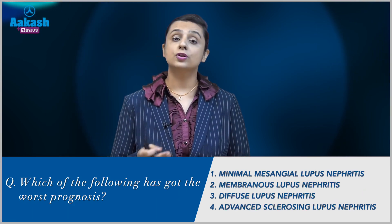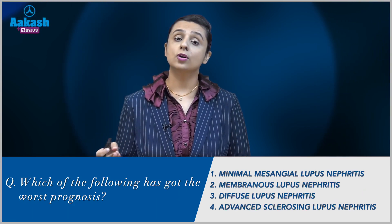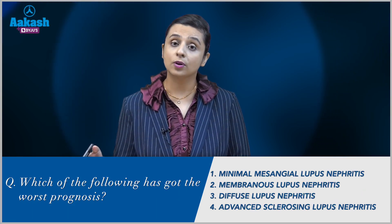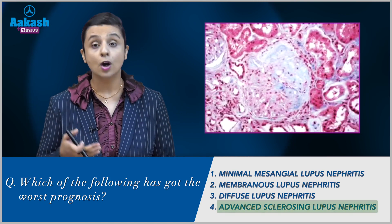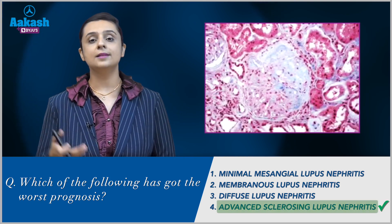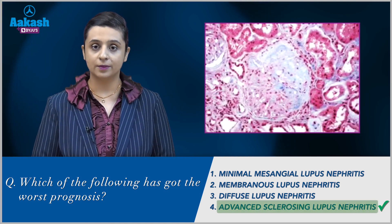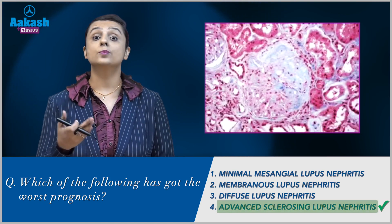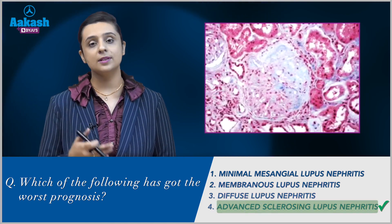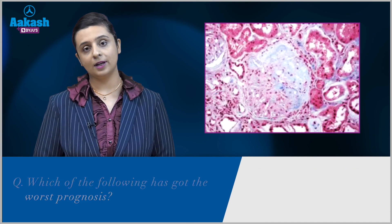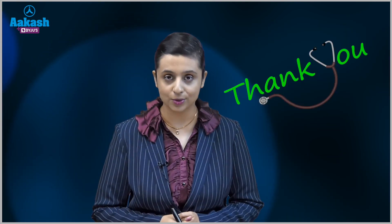Which type has the worst prognosis? The answer is Class 6, advanced sclerosing lupus nephritis, as more than 90% of the glomeruli will be sclerosed.